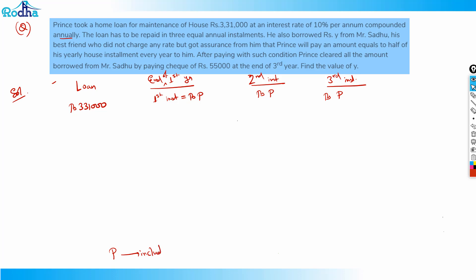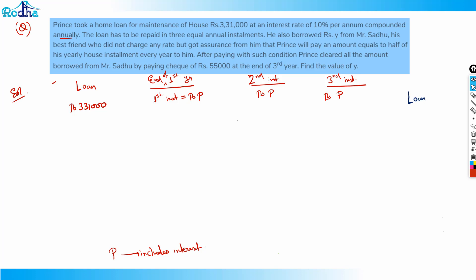Rupees P here — P includes interest. Because P is an installment, whenever I'm taking a loan from the bank and paying back in installments, I'm paying back loan plus interest. So every installment includes interest — that's the key point.